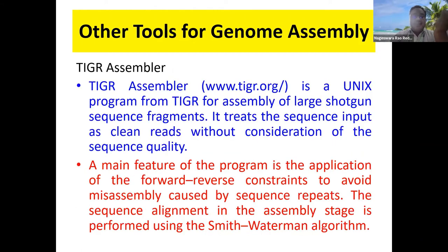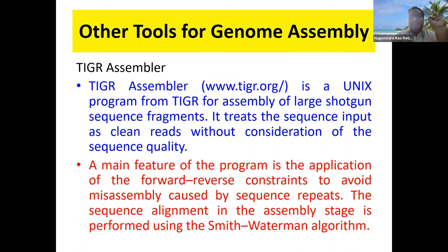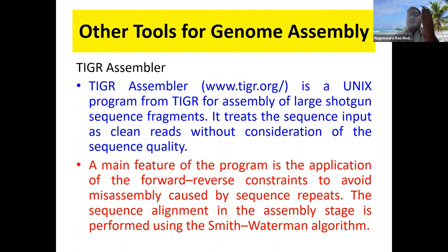With these three steps, your genome can be completely assembled. Consed is available at a specific location. Most people use these three Unix-based programs — PHRED, PHRAP, and Consed — which are freely available and have been improved a lot. PHRED is for base calling, PHRAP for read assembly into contigs, and Consed for finishing the genome.